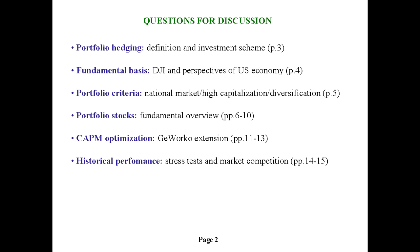Today, we consider a method of hedging based on the PCI GeWorker model. For a start, a brief explanation of the method will be provided. At the second stage, we'll move on to the example portfolio composed on the basis of Dow Jones Industrial Average. The choice will be provided by fundamental analysis. In conclusion, we'll develop the asset criteria.